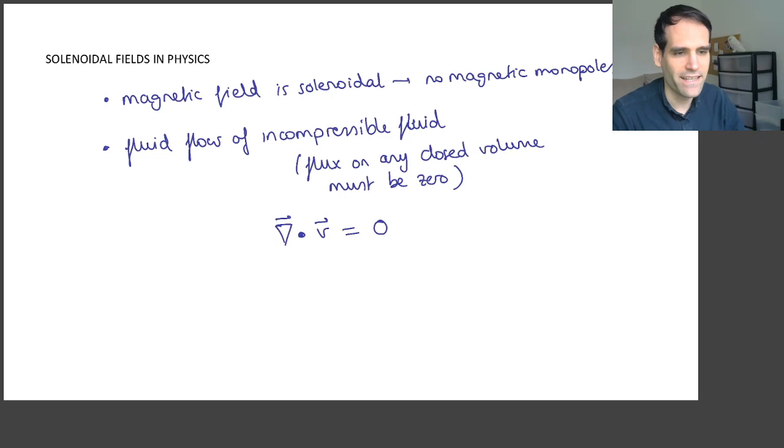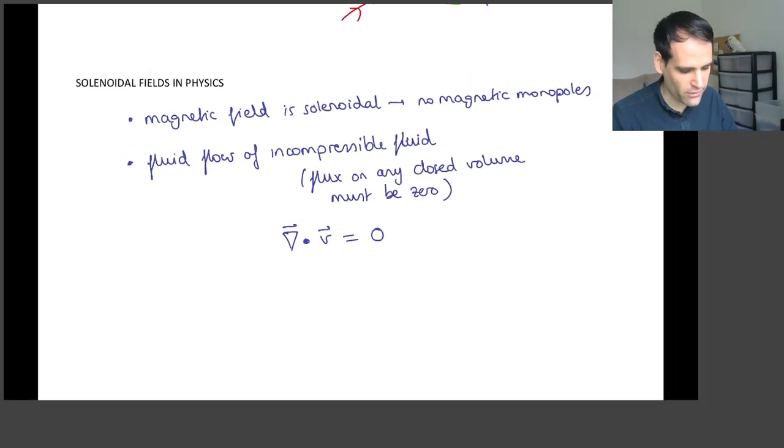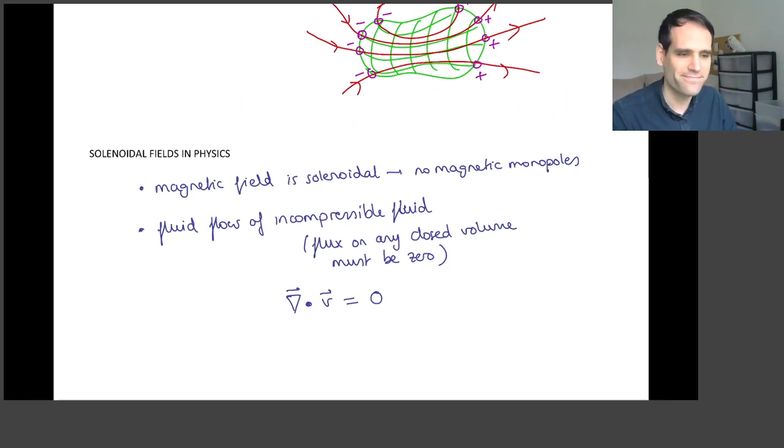And now we can conclude that the divergence of the velocity of water must be zero at every single point. Very, very nice. So you can see how relevant the concepts of divergence can be in physics. So thanks for watching. See you in the next video.